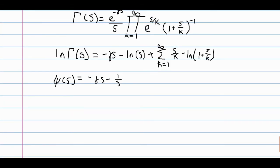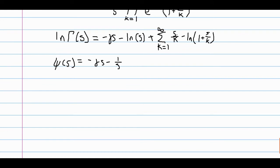And here, when we take the derivative on the inside, we get each of these goes to 1 over k, and then we get 1 over k divided by 1 plus s over k. And this term, if we multiply top and bottom by k, is just equal to 1 over k plus s.